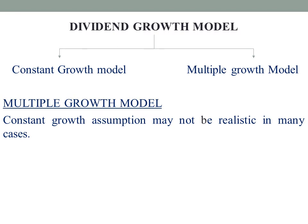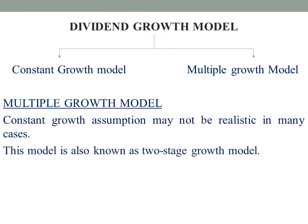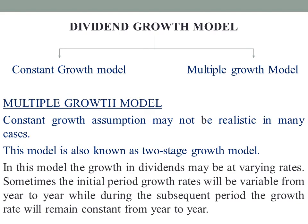This model is also known as the two-stage growth model. In this model, the growth in dividends may be at varying rates. Sometimes the initial period growth rates will be variable from year to year, while during the subsequent period the growth rate will remain constant from year to year.